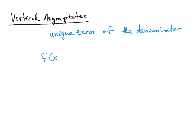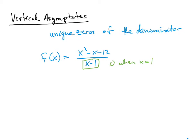For example, if I have f of x equals x squared minus x minus 12 over x minus 1, the value that makes the denominator 0 is x equals 1. So we would say that x equals 1 is the vertical asymptote here.